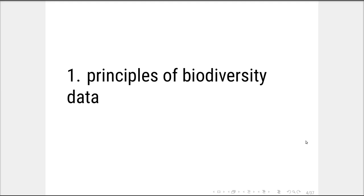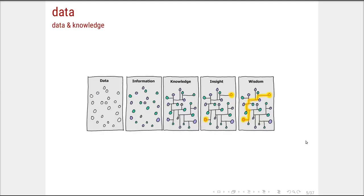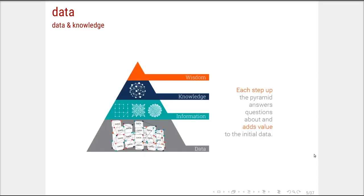Starting with the principles of biodiversity data, it's really important to keep in mind that data is the basis, and we add layers and connections to data to build knowledge, theory, and wisdom. Although this is not a linear process, data is the foundation, and knowledge adds value to initial data. Data is a huge portion of this process — not only the basis for building knowledge, but with knowledge we are also making new inputs to our data.